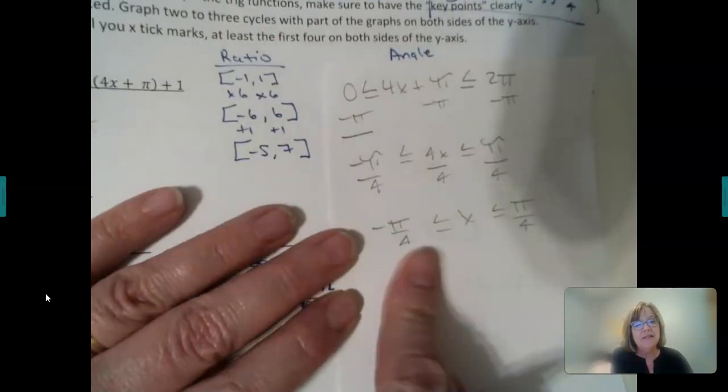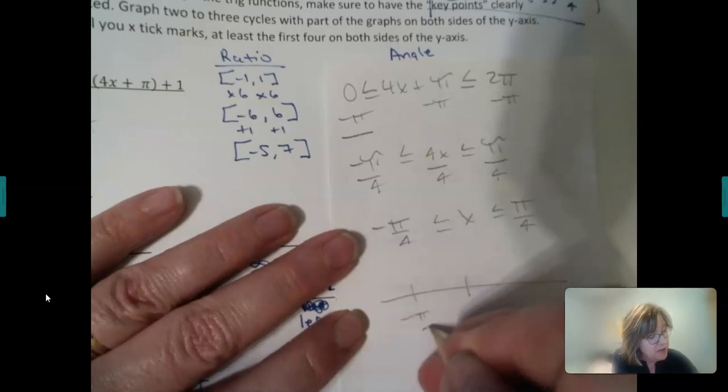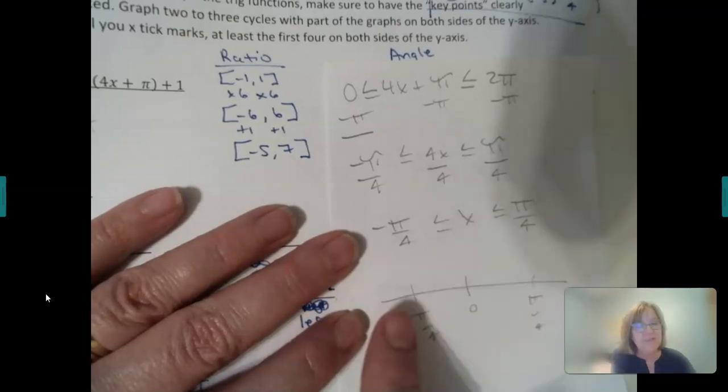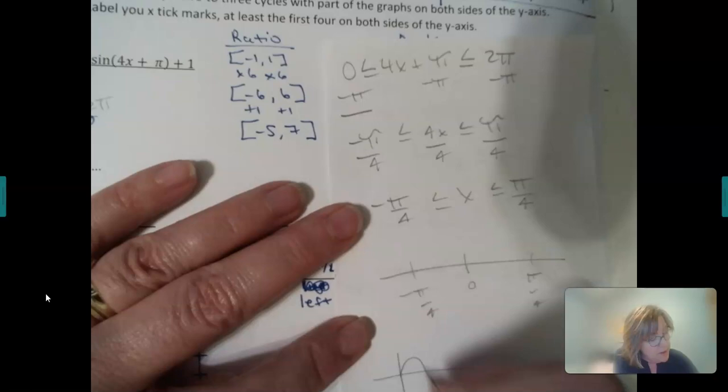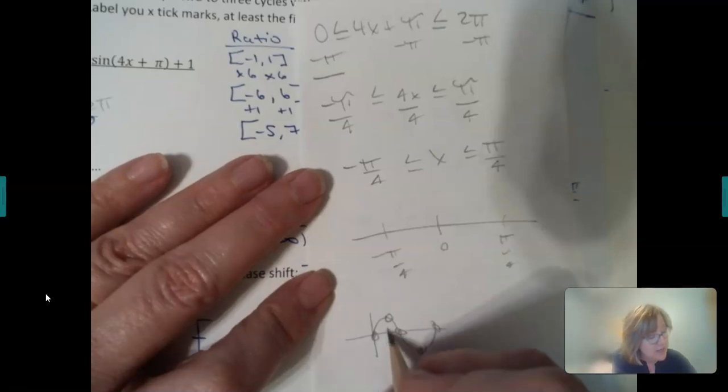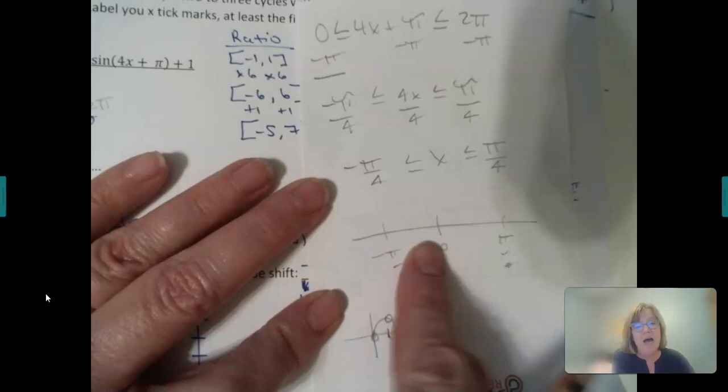Subtract the pi from everything, and divide everything. Now, some of you are struggling with tick marks, from a negative pi over 4, here's 0, pi over 4, that's not enough tick marks, because you need, if you're going to go mid, high, mid, low, mid, you need 4 pieces.